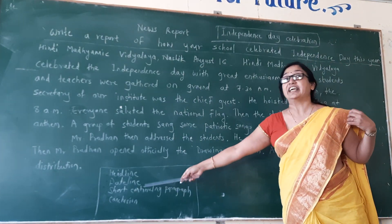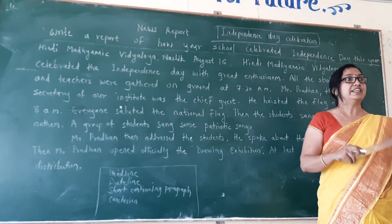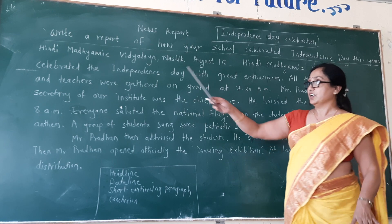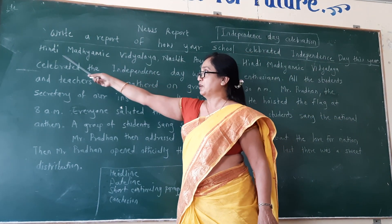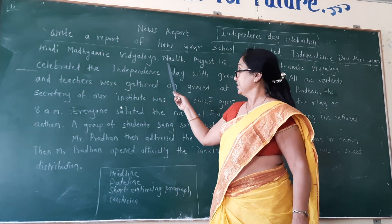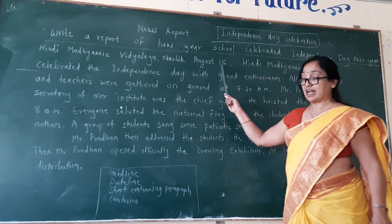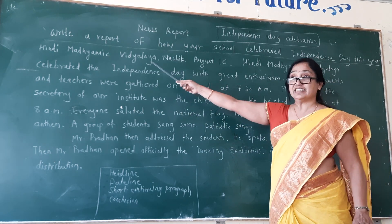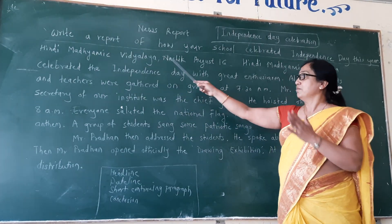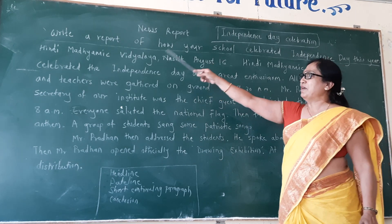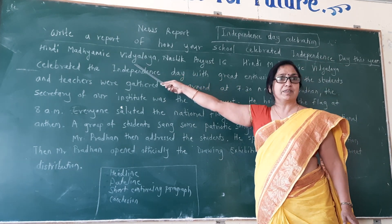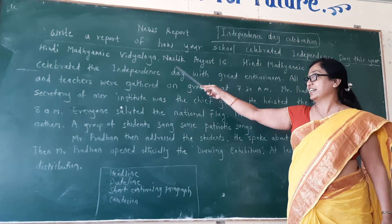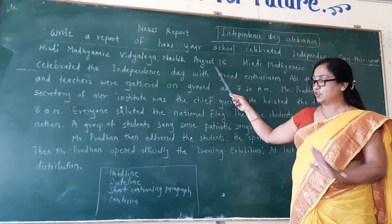Then we go to the dateline. The dateline means the date and place. This is the date — August 6th. This is the dateline. We will write the dateline which includes the place and the date. If you did not write the name, it will also affect the date. That is why you write it at the beginning — the dateline.